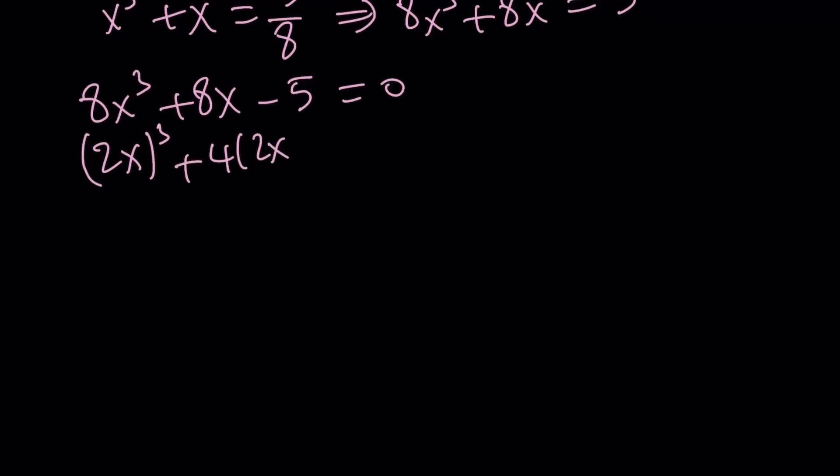All right, so we're going to go ahead and rewrite our equation. x cubed plus x equals 5 over 8. And then we're going to go ahead and multiply both sides by 8. That's going to be 8x cubed plus 8x equals 5. And I'll put everything on the same side. We're going to get the following cubic equation. It's not quadratic, it's cubic. But here's the thing. We can go ahead and write this as 2x cubed and this one is 4 times 2x minus 5 equals 0. And we can use substitution. Let's go ahead and call 2x, y. Notice that the sum of the coefficients in this equation is 0. 1 plus 4 minus 5 is equal to 0.